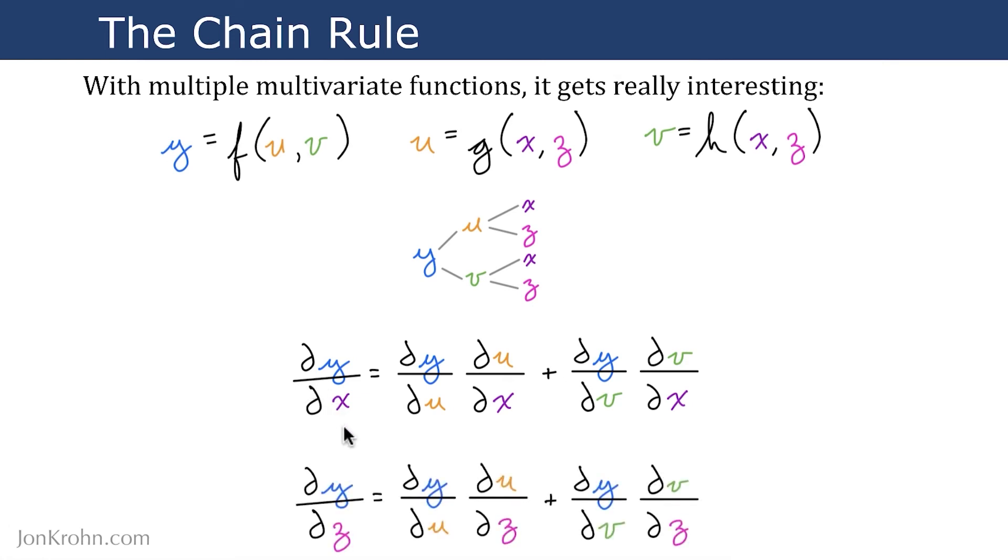Same thing for ∂y/∂z: we have two legs to trace down, so we have two separate terms that we add together, one representing the u leg and the other representing the v leg.